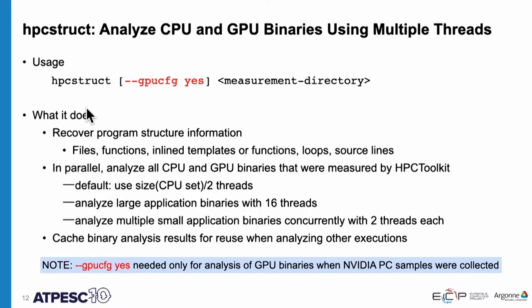When you launch HPC struct on a measurement directory, it runs in parallel — using 16 threads for large binaries and running many binaries concurrently with fewer threads for smaller ones. You can cache the results for future use: if you analyze your program once, you'll still be using the same libc, the same MPI library, and so all analysis results computed once can be saved in a cache. Then transparently, when you run HPC struct on your next set of measurements, it only analyzes things that changed, such as the piece of code you edited.